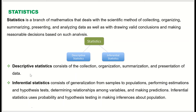Descriptive statistics consists of collection, organization, summarization, and presentation of data. Descriptive statistics deals with the method of collection of data — we will go over the methods of collection later — organizing the data, summarizing the data, and presenting the data.